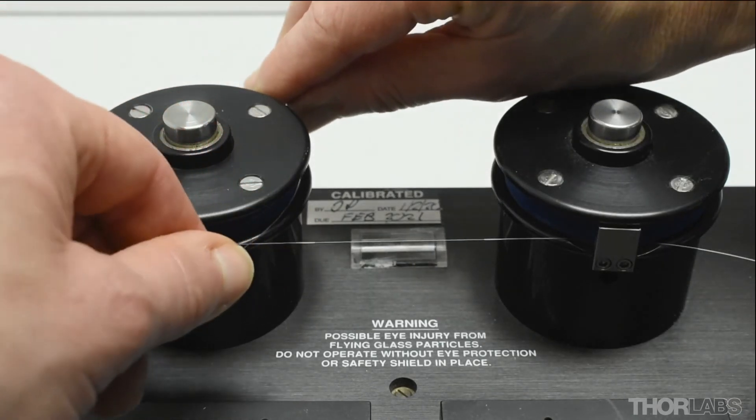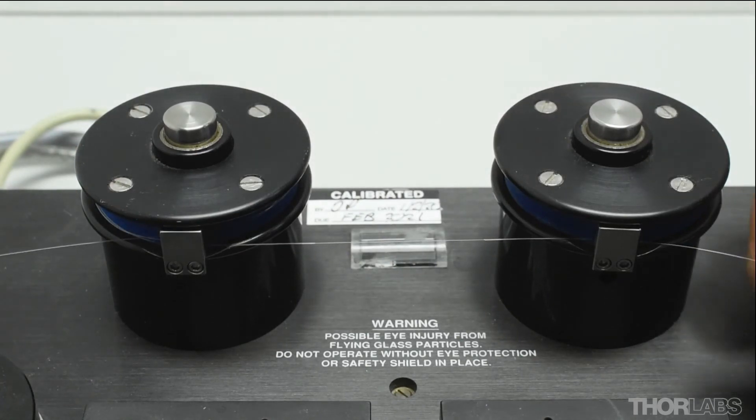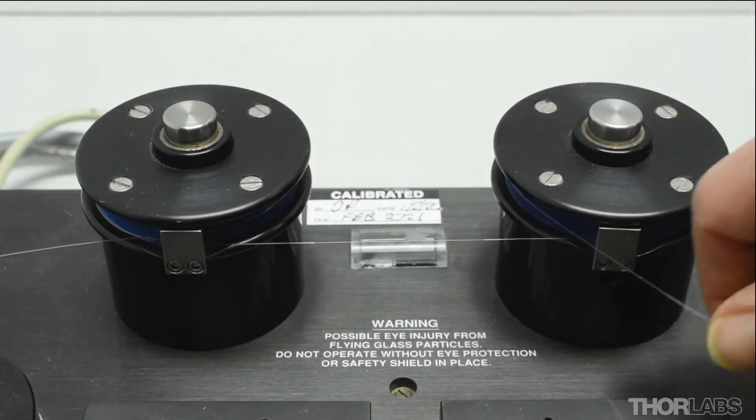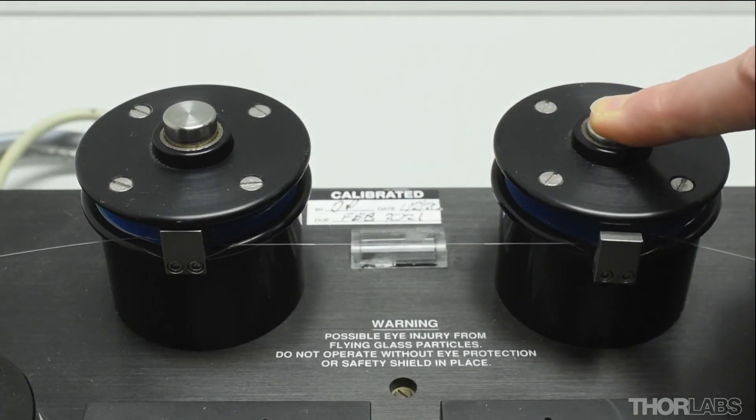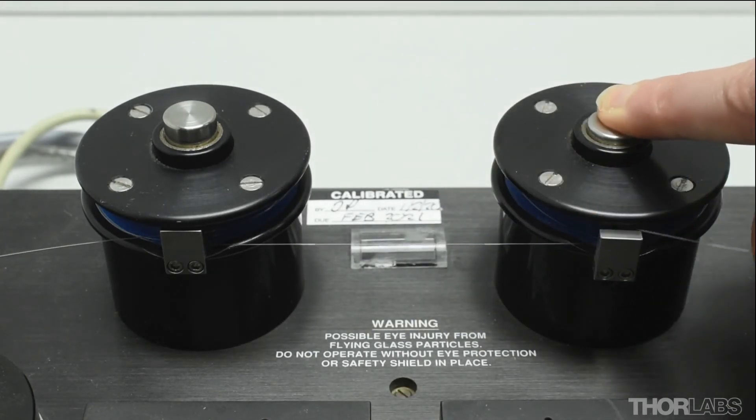Now, while maintaining tension, wind the fibre twice round one of the mandrels, securing it under the clamp. Make sure that the wrapped fibre is not overlapped. Then repeat for the other mandrel.